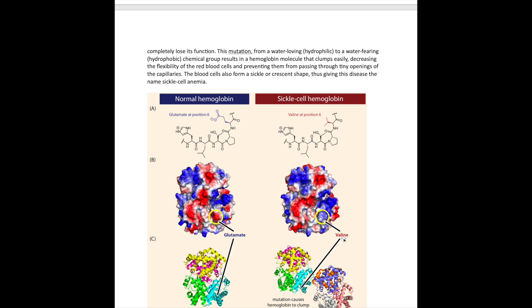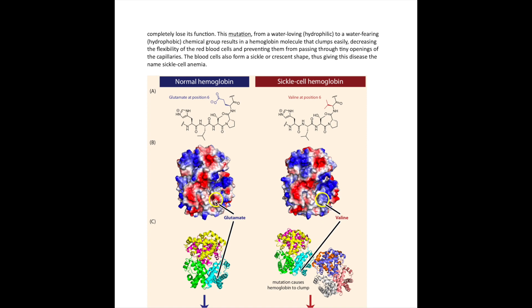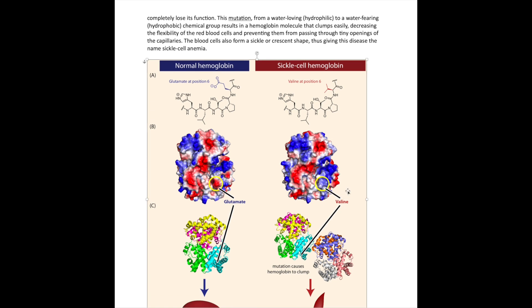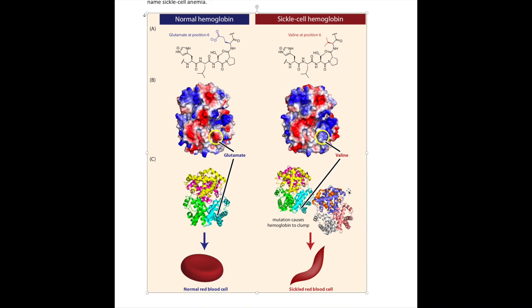When you change that glutamate to valine, the color has changed now. It becomes bluish, which means it's now non-polar or hydrophobic (water-fearing). You change from something that's polar to non-polar. That creates a huge problem because the non-polar portion now would like to interact with other non-polar parts of hemoglobin. Non-polar will mix with non-polar, polar will mix with polar. The non-polar will all mix together, kind of like glue clumping together.